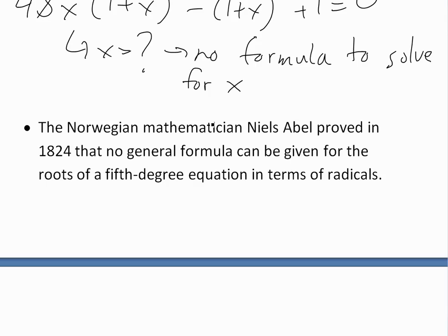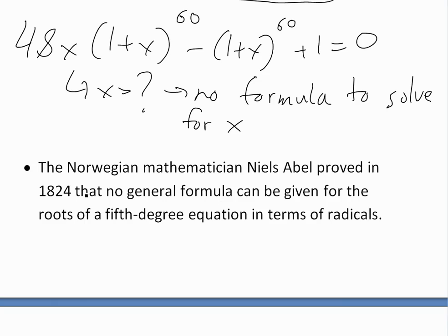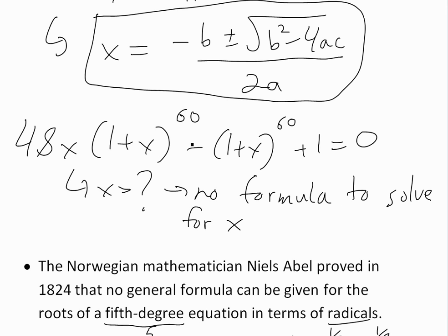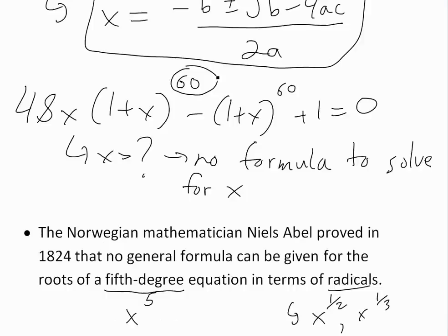In fact, the Norwegian mathematician Niels Abel proved in 1824 that there is no general formula for the roots of a fifth-degree equation in terms of radicals. Radicals are basically square roots, cube roots, and so on — anything with a fractional or negative exponent. So you couldn't write such a formula for anything of degree 5 or higher, let alone x to the 60.